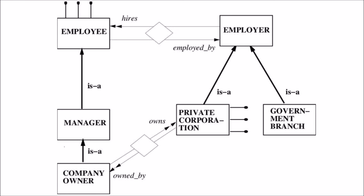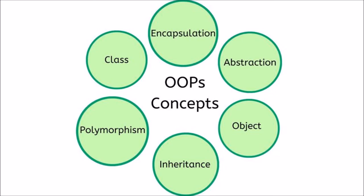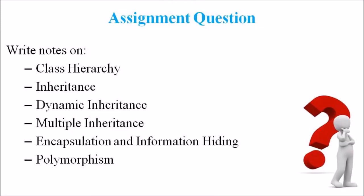In this lecture, we discussed the fundamental principles of object-oriented programming or the basic OOP concepts. Those concepts are class hierarchy, inheritance, multiple inheritance, encapsulation, and polymorphism. Hope you have understood this topic. Please go through this assignment question: Write in detail about the OOP principles — class hierarchy, inheritance, dynamic inheritance, multiple inheritance, encapsulation, and polymorphism.